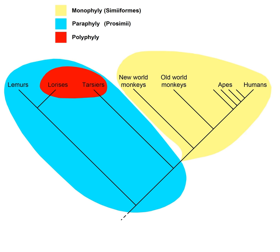Some authors have sought to define monophyly to include paraphyly, as any two or more groups sharing a common ancestor. However, this broader definition encompasses both monophyletic and paraphyletic groups as defined above. Therefore, most scientists today restrict the term 'monophyletic' to refer to groups consisting of all the descendants of one common ancestor.